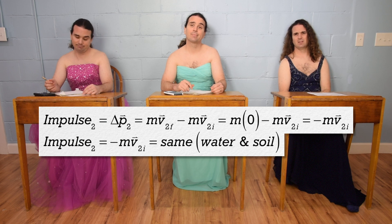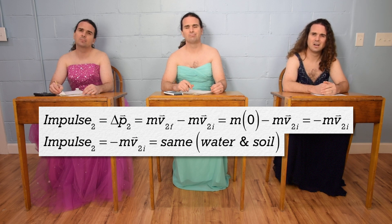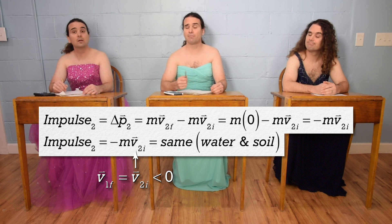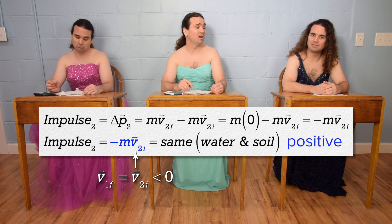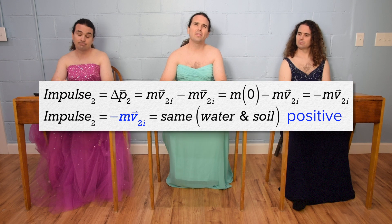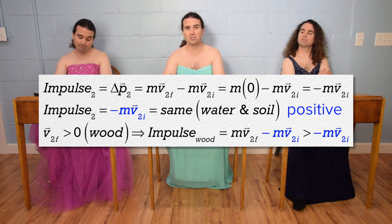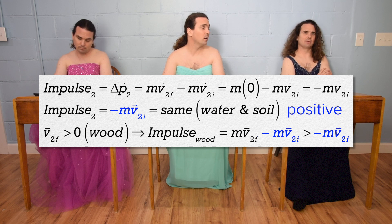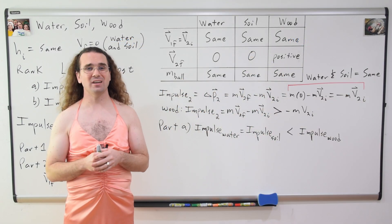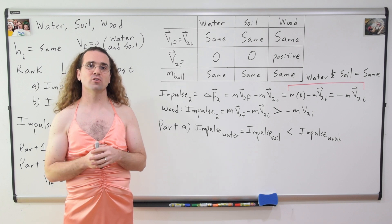Is the impulse really negative? That would mean the impulse given to the racquetball during the collisions is downward, and that does not make sense. The final velocity during freefall, or part one, is down — and therefore negative — so the impulse ends up being positive, or upward. A negative times a negative is a positive. And what about the impulse for wood? The final velocity for part two for the wood is positive; therefore the impulse for the wood must be greater than the impulse for the water or the soil, because adding the positive value of m·v_final makes the impulse larger. So the complete answer for Part A is: impulse during the collision with water equals impulse during the collision with soil, and both are less than the impulse during the collision with the wood.